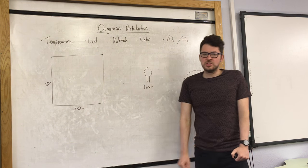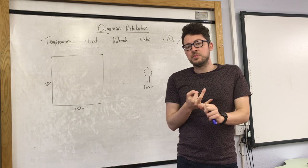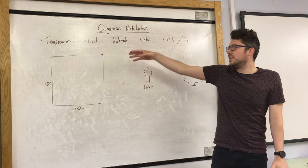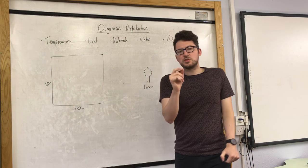Now, organism distribution simply means where living things are and how many of them you would find in a certain area. So obviously organism means living thing, distribution just means where something is.